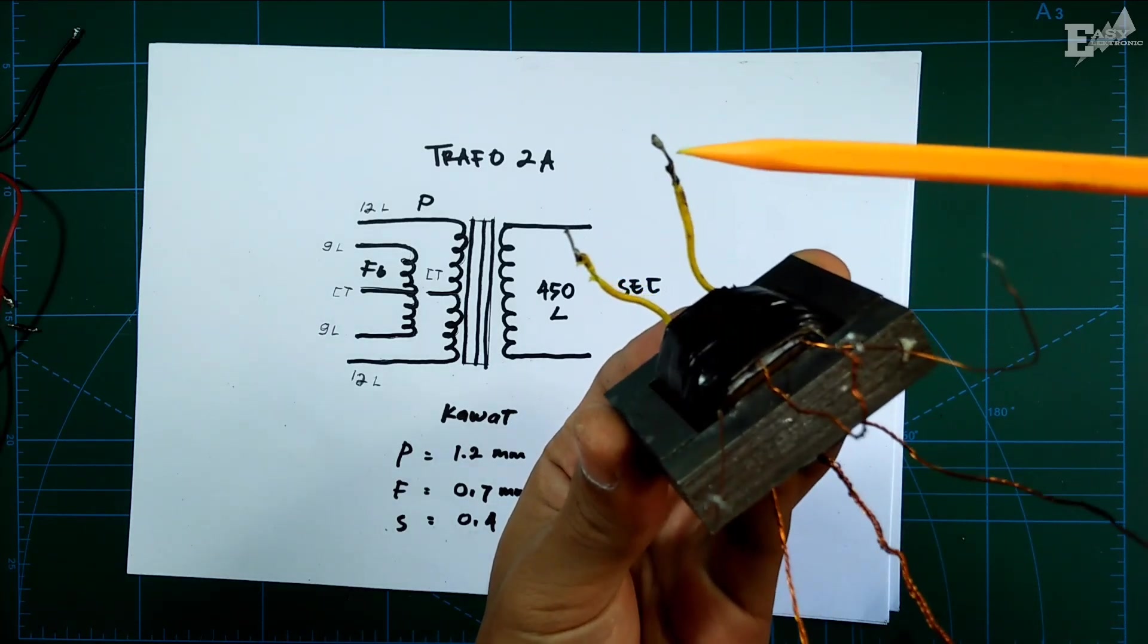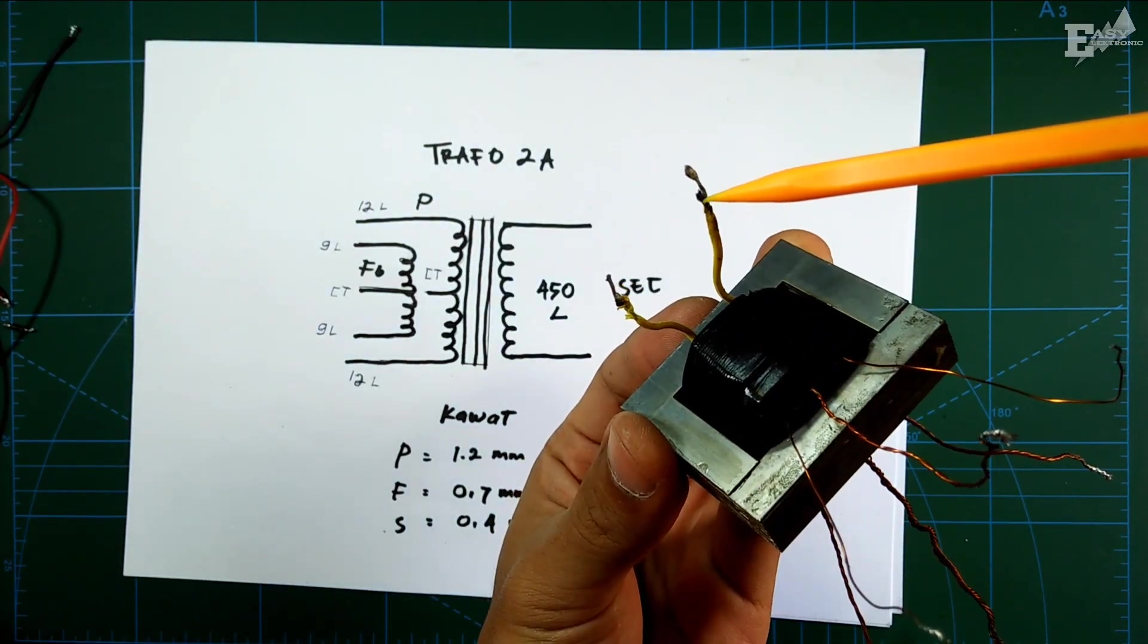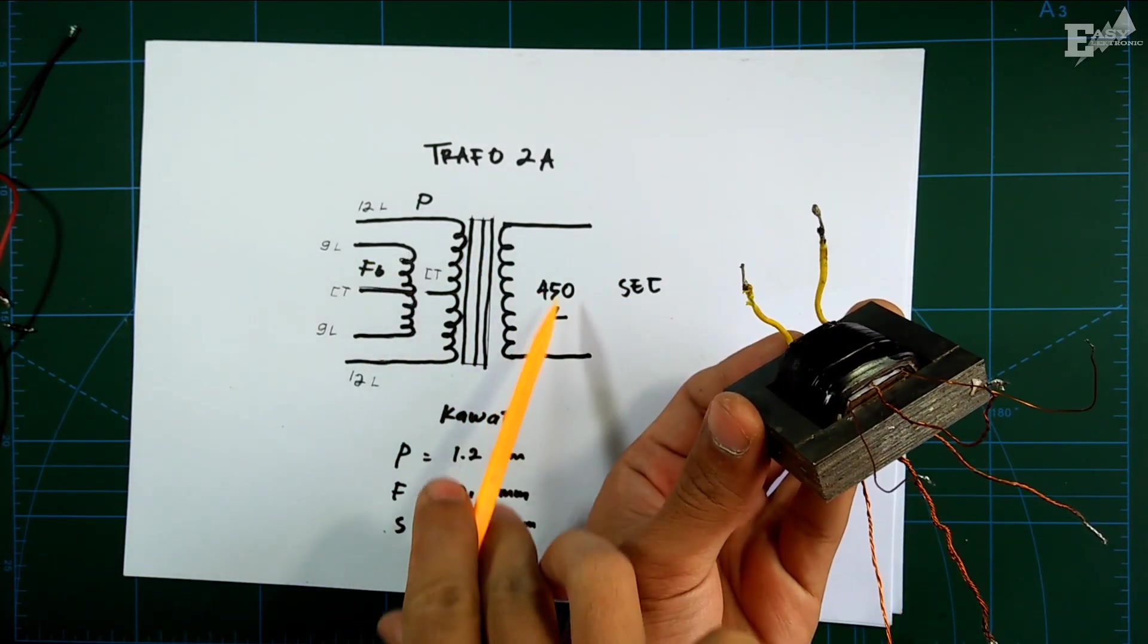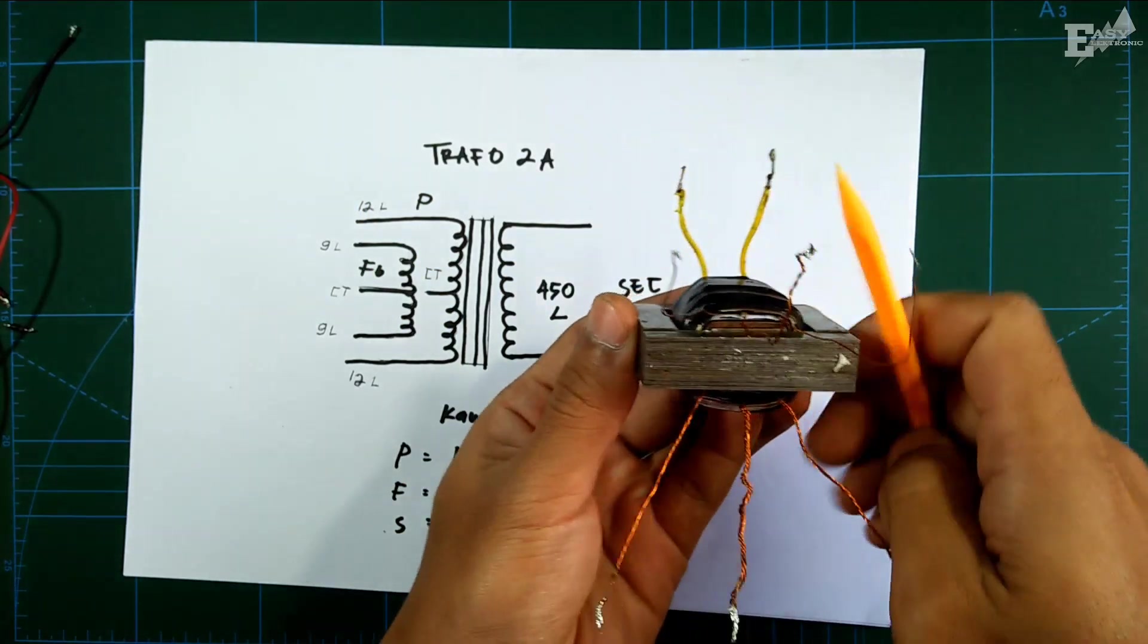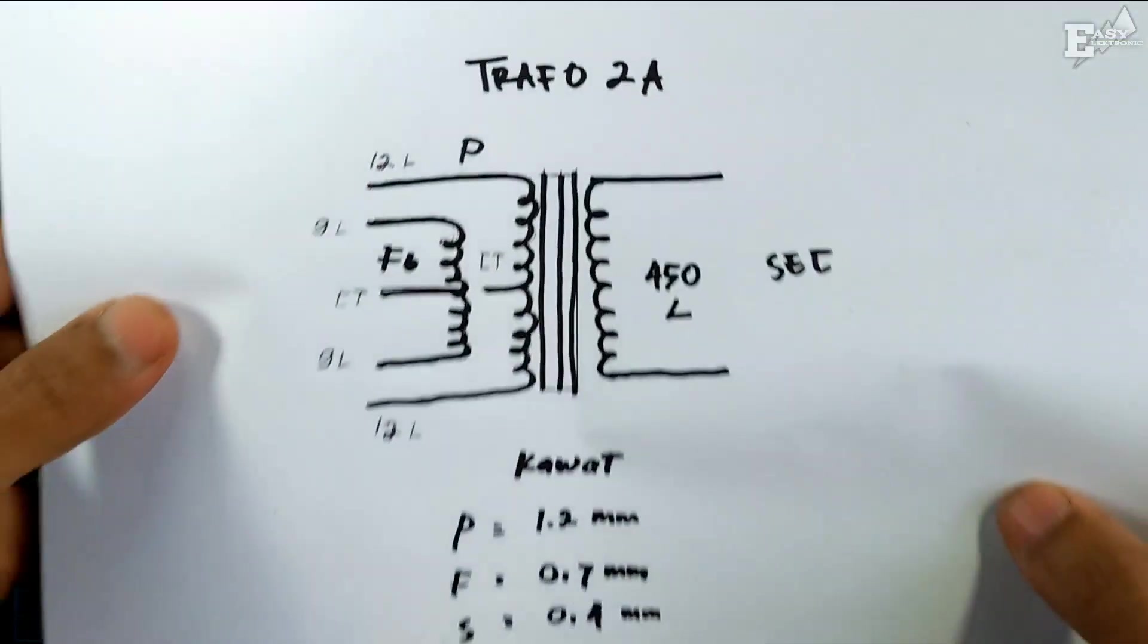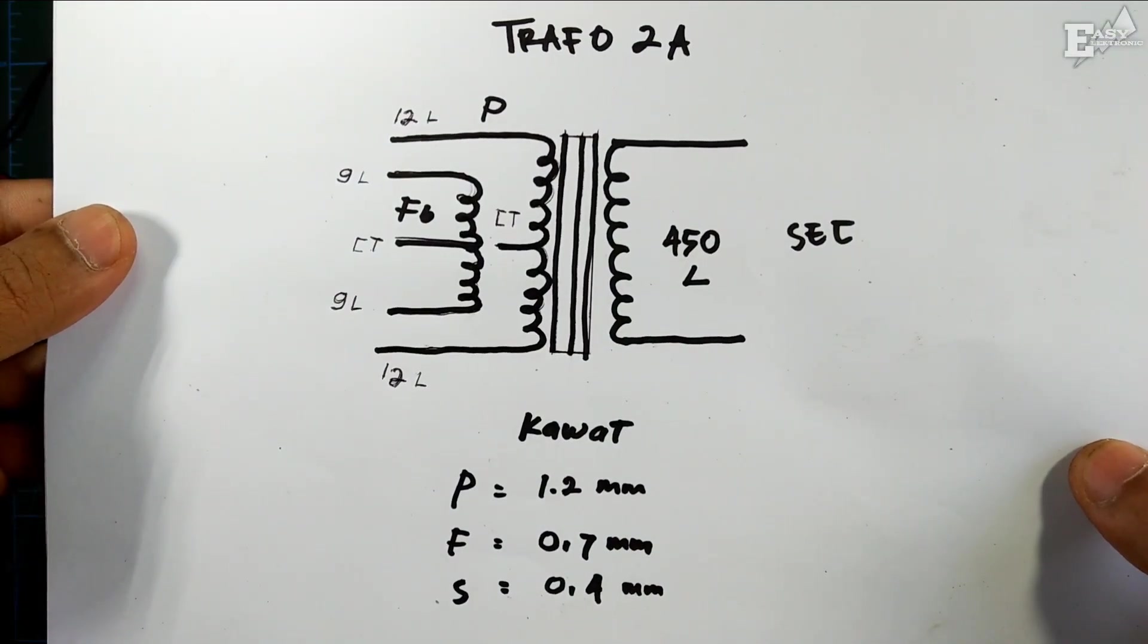For the primer I'm using 1.2mm wire, and this output uses 0.4mm wire, 450 turns. Okay, if you want to try making it, you can screenshot this for the transformer schematic.